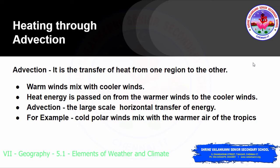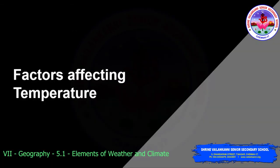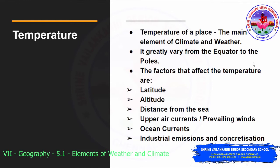Heating through advection will be covered in detail in the next chapter on pressure and winds. Now we will move on to the factors affecting temperature. Temperature is one of the main elements of climate and weather. From the equator to the poles, the earth experiences a wide range of temperatures. The factors that affect the temperature of a place are: latitude, altitude, distance from the sea, upper air currents or prevailing winds, ocean currents, and industrial emissions and concretization.